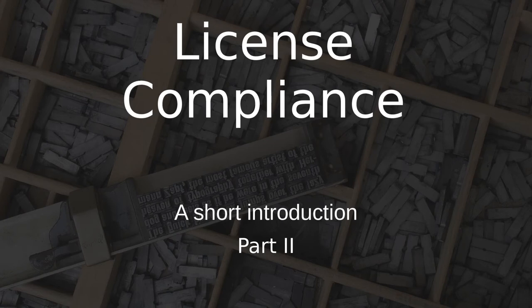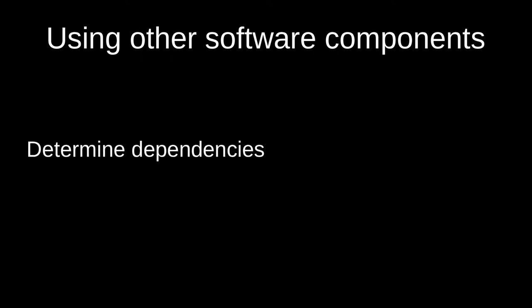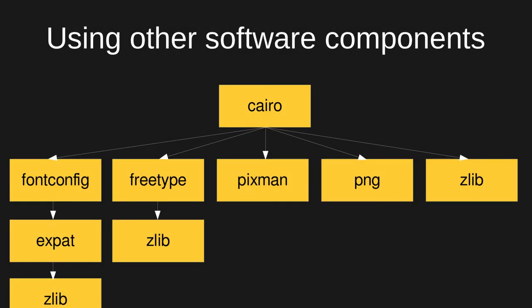In this part of the compliance lecture, we're going to look at when you are using components. Say we're developing a software called Cairo — the first thing we need to do is determine the dependencies for that program. For Cairo, which is an existing program, there are a couple of different dependencies. Cairo depends on fontconfig, which in turn depends on a couple of other things — so this is a graph of the dependencies for Cairo.